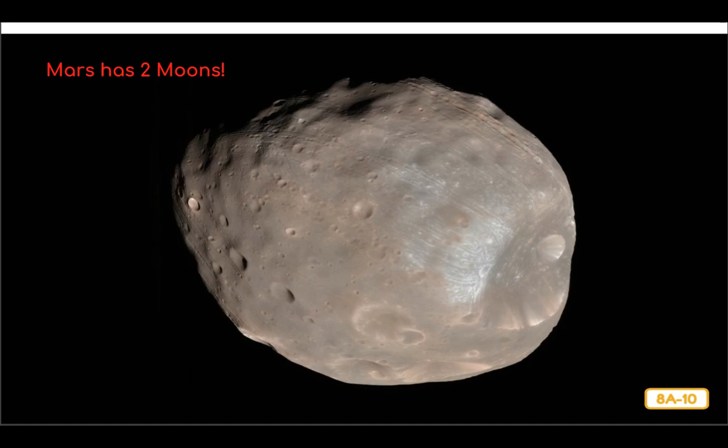Mars has two moons, but they are small and oddly shaped. Astronomers believe that these moons are actually large asteroids, or space rocks, that became trapped in orbit as they passed by Mars billions of years ago.